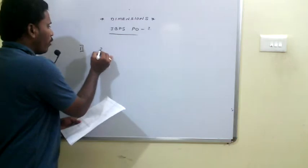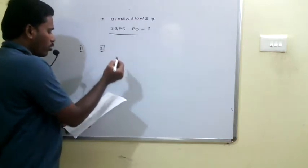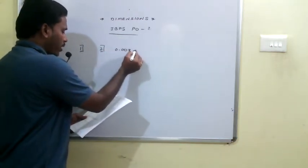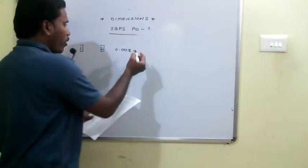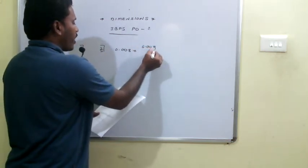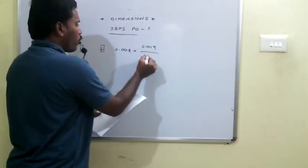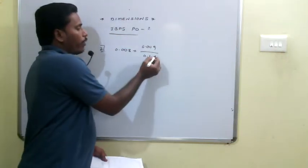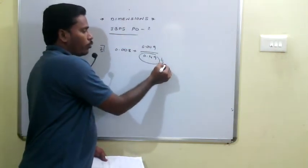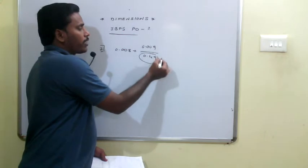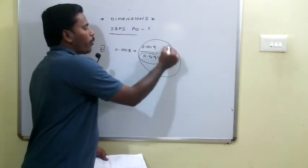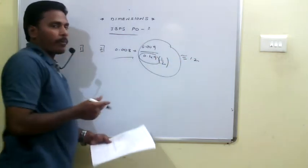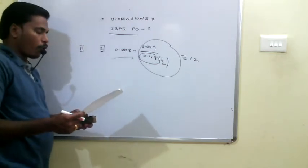Problem 2: (0.008 + 6.009) / 0.7². Since 0.7² = 0.49, which is approximately 1/2. So 6 divided by 1/2 is approximately 12. Neglecting the small 0.008 term, the approximate value is 12.